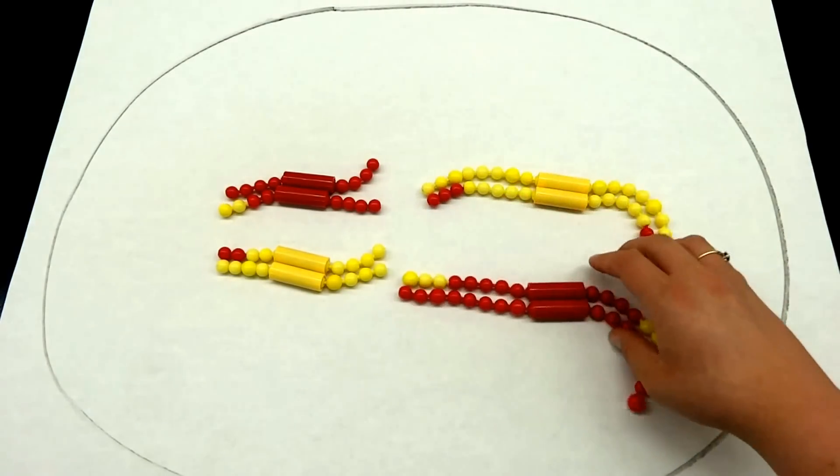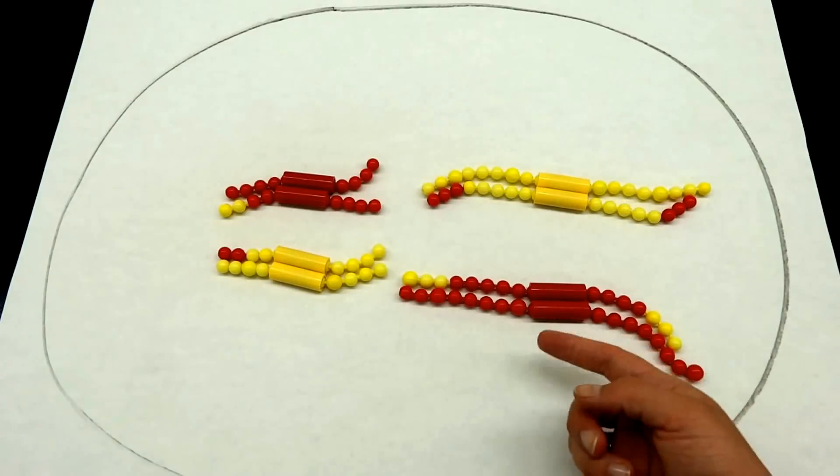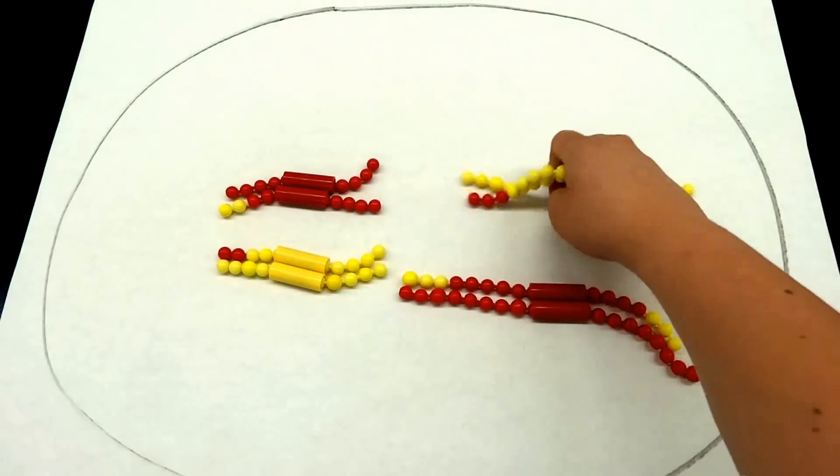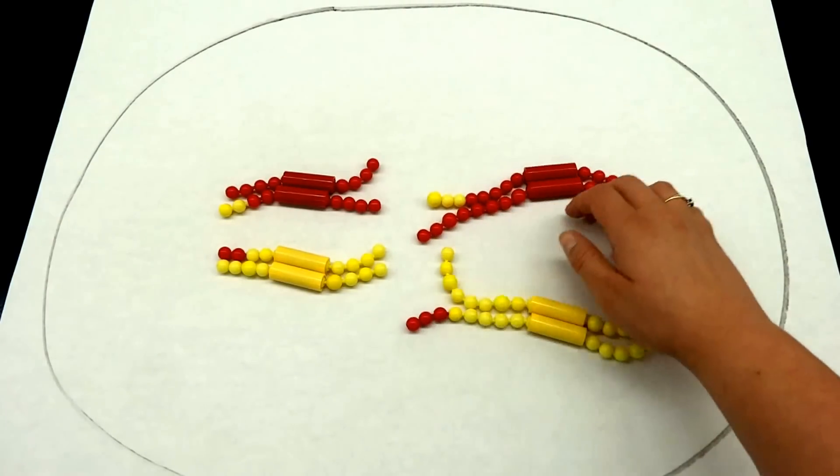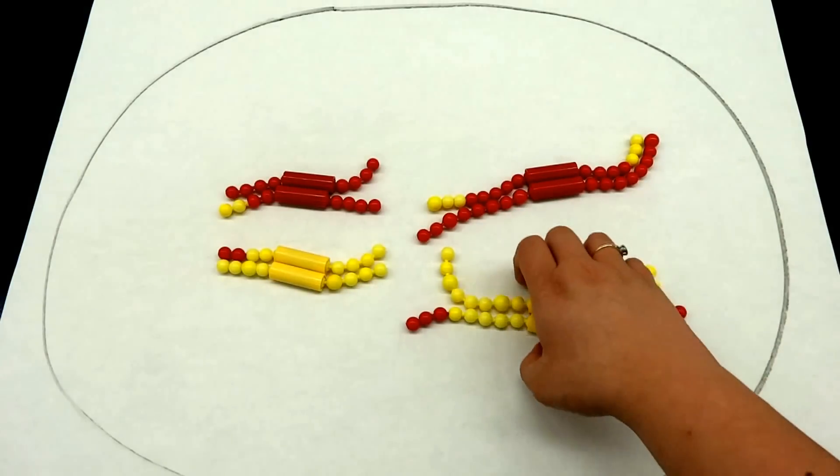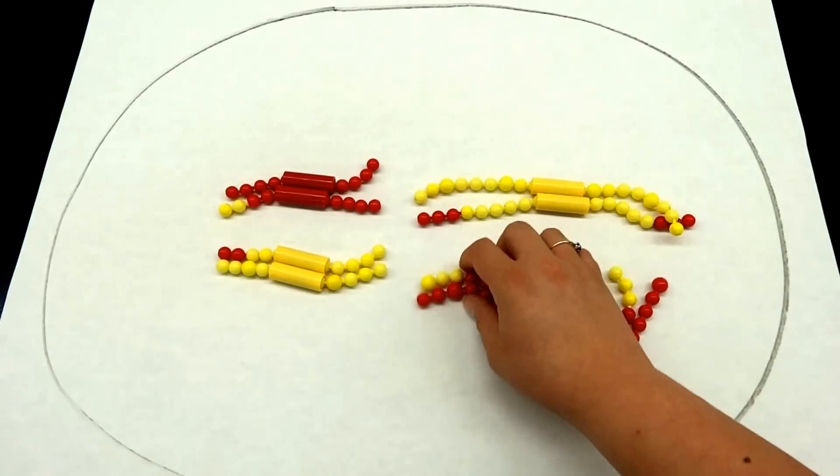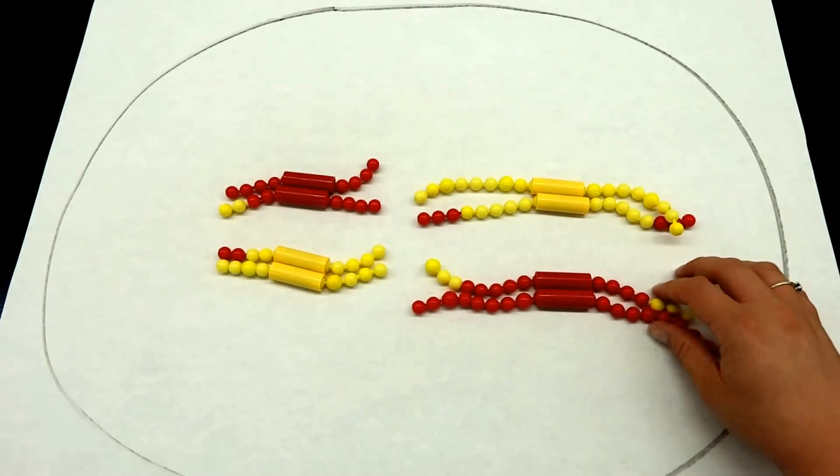Now notice when they line up there's no rhyme or reason. We've got one red on this side, one red on that side. We could have it so that there's two reds on one side, two yellows on the other side. This is what we call independent assortment, which is going to happen during metaphase one during meiosis one.